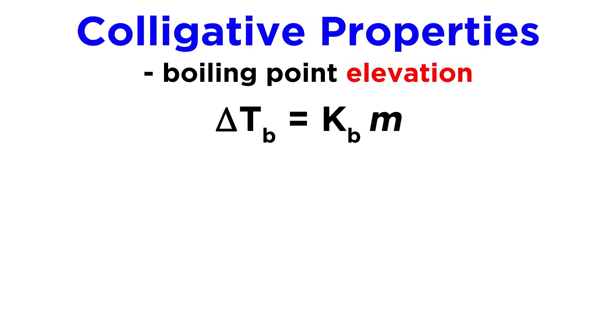The change in boiling point due to the presence of solute particles is called boiling point elevation, and this change can be calculated using the following equation.